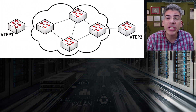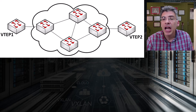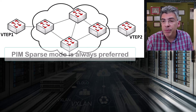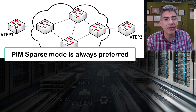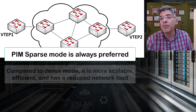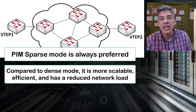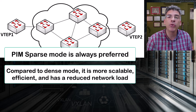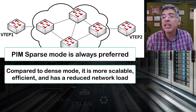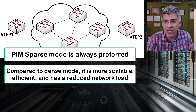This is the topology that we used in our deployment of a multicast underlay for VXLAN. When you use multicast for the VXLAN underlay, it's best to use sparse mode rather than dense mode for various reasons. Sparse mode is more scalable, more efficient, has a reduced network load, and is thus ideal for high performance, high throughput data center and cloud deployments. You would never consider dense mode for such networks.